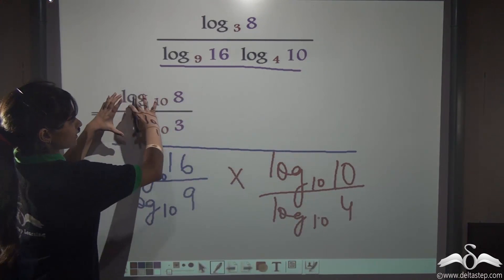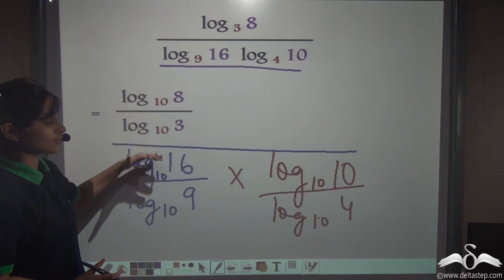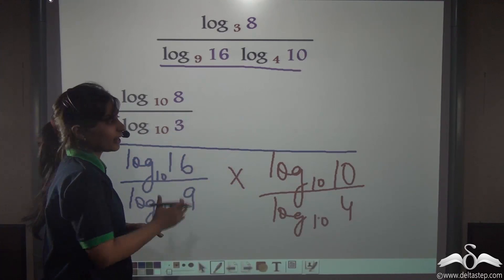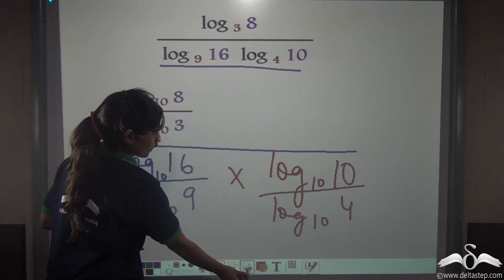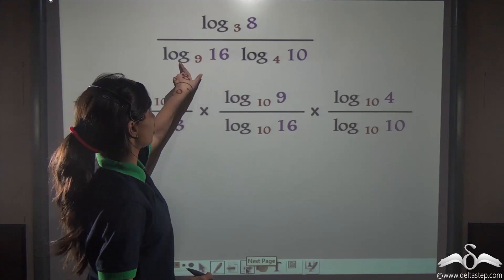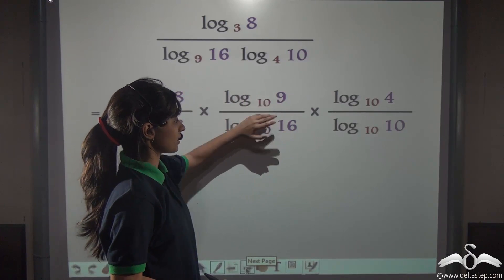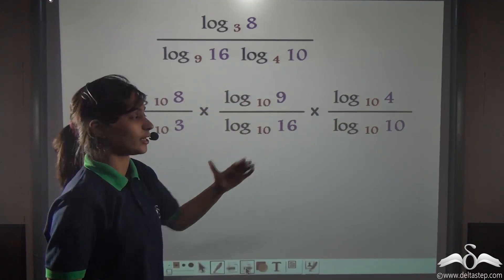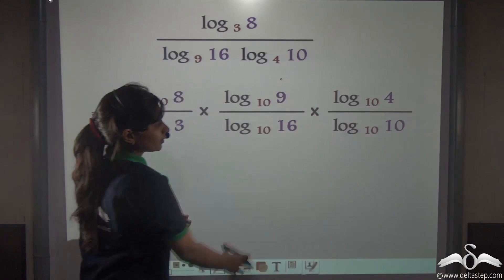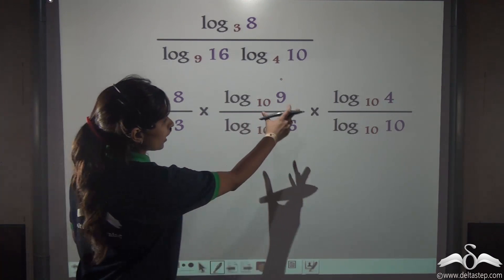Now you can see the numerator divided by the denominator. Whenever we have such fractions, we reciprocate it and then calculate. So we have reciprocated log 16 to the base 9 — which was log 16 to the base 10 by log 9 to the base 10 — so that we can calculate further. So we are done with the numerator and the denominator. Now what do you think? Can you cancel anything?